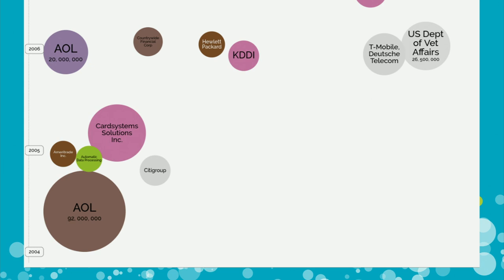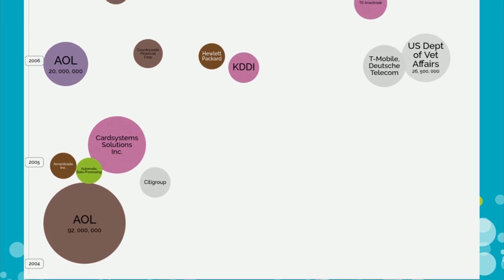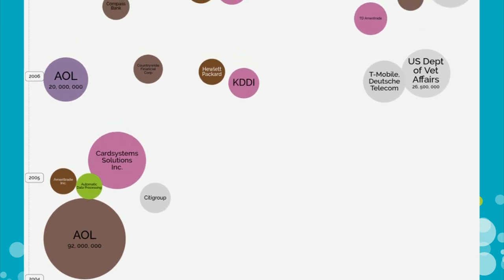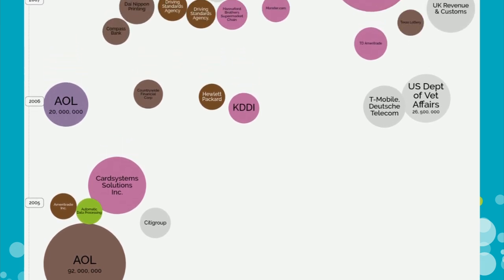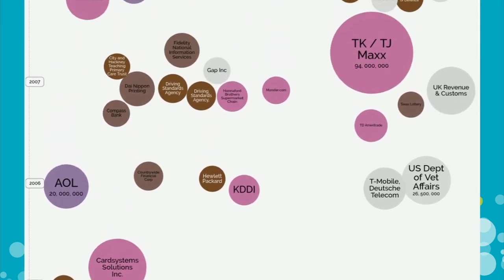The piece you can see on the screen shows major security breaches in companies over time. The size of the circle represents the number of records affected.